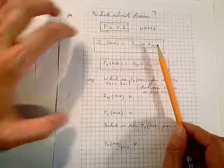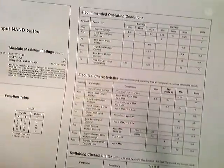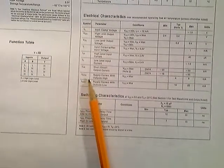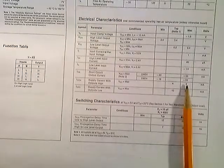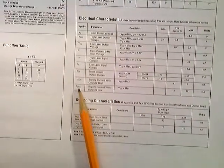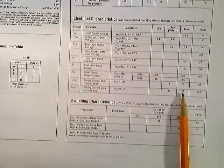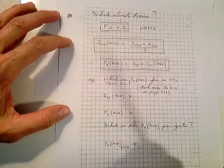So if you look at the specifications here for a particular package, you can see that we have ICC in the high state. Here's a typical value and here's your maximum value of 8 milliamps. And then ICC low, the low state, typical is 12 milliamps and the max is 22 milliamps. So they're coming from the specification here. Just divide that by 2 to get the average.